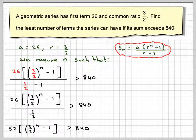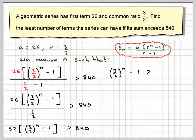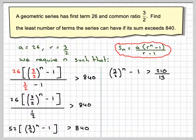The next step is to divide by 52. So we get 3 over 2 to the power of n minus 1 is greater than 210 over 13. When you divide 840 by 52, it becomes 210 over 13.